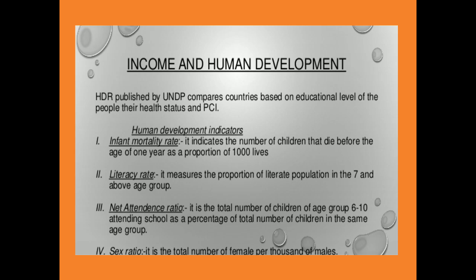The Human Development Report, published by the United Nations Development Programme, compares countries based on educational level, health status, and per capita income (PCI). Human development indicators include: Infant Mortality Rate (IMR), which indicates the number of children that die before the age of one year as a proportion of 1,000 live births; literacy rate, which measures the proportion of the literate population in the age group 7 and above; and net attendance ratio, which is the total number of children aged 6 to 10 attending school as a percentage of total children in the same age group.